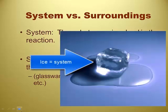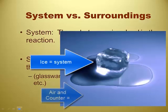It's always looked at from the point of view of the system. So if your ice cube is melting, that's the system. It's absorbing energy from the surroundings. So the air just around the ice cube gets cold. Endothermic reaction.